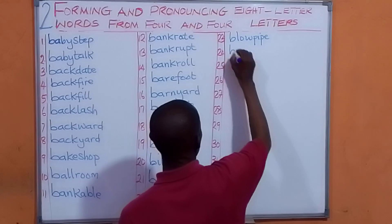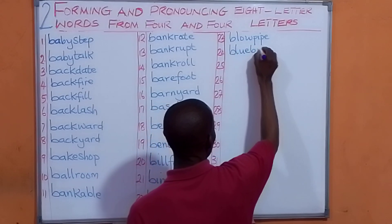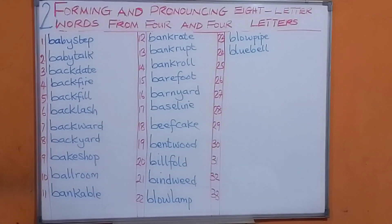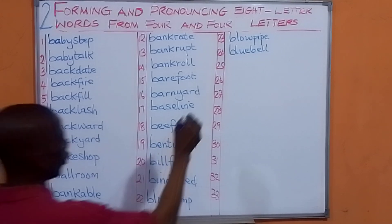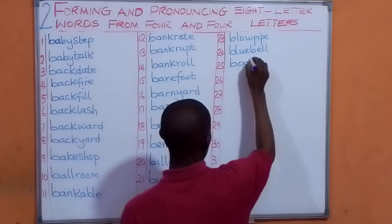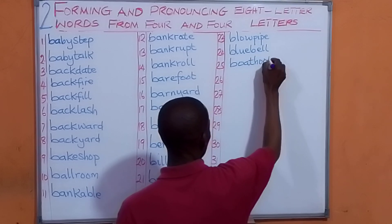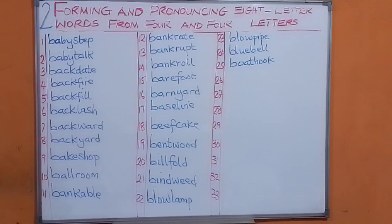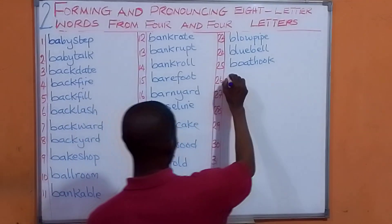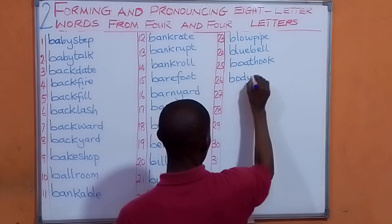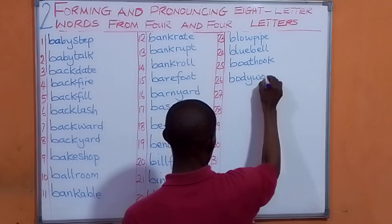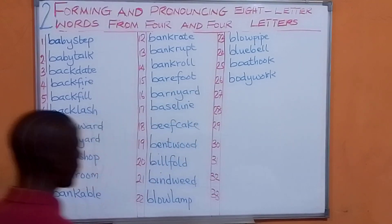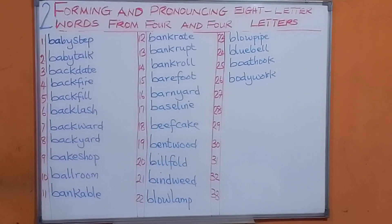Let's have blue and bell. We have bluebell. Let us have boat and hook. We are going to have boathook. Let's have body and work. We have bodywork.